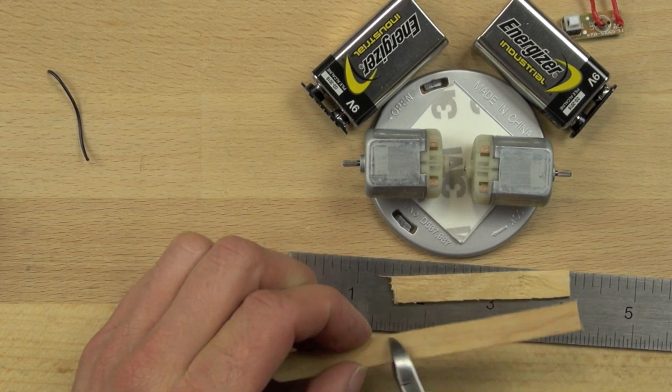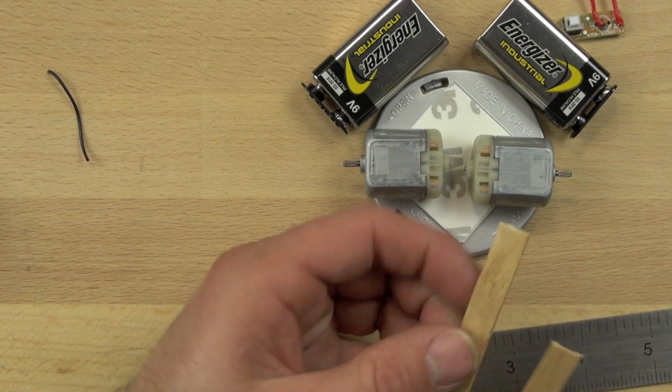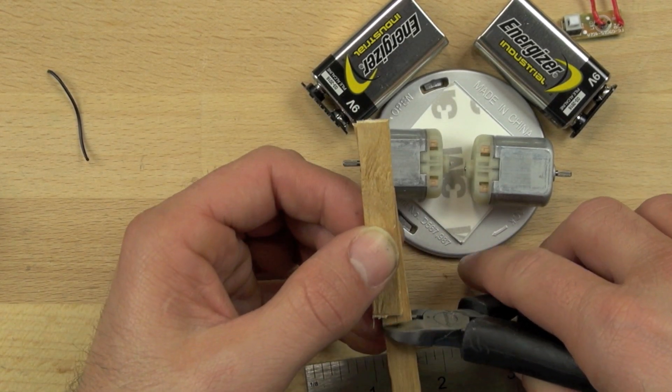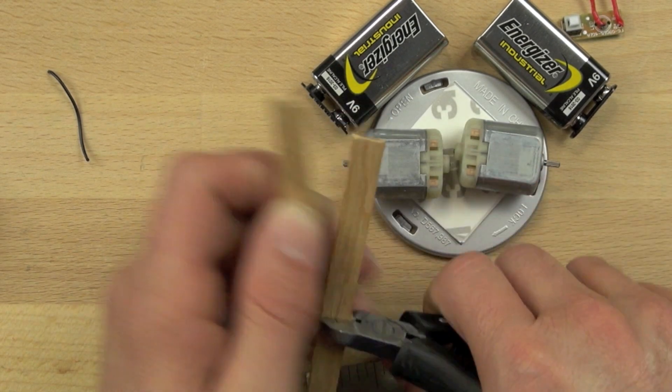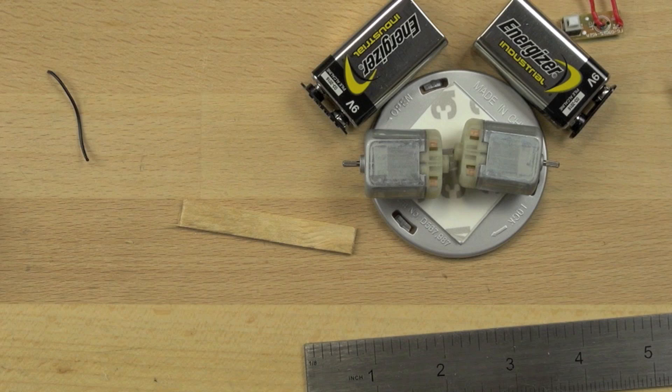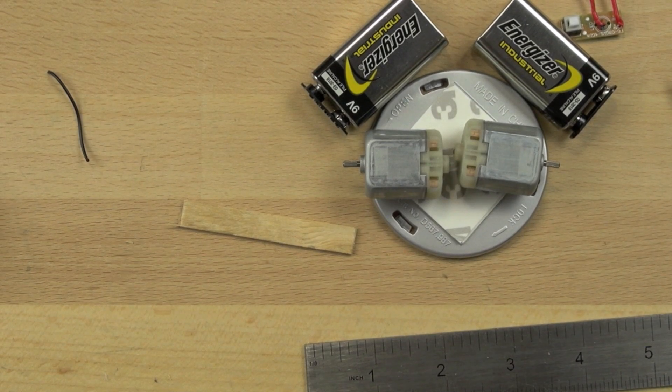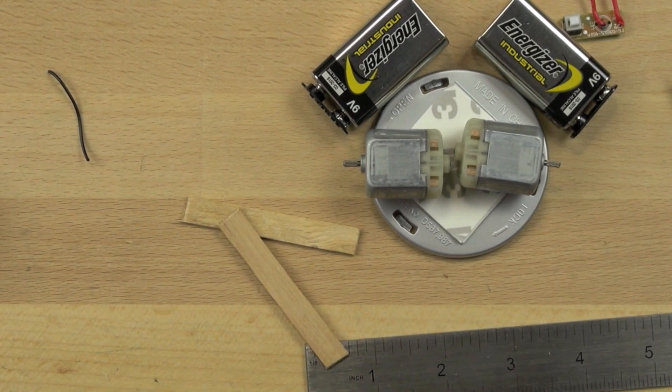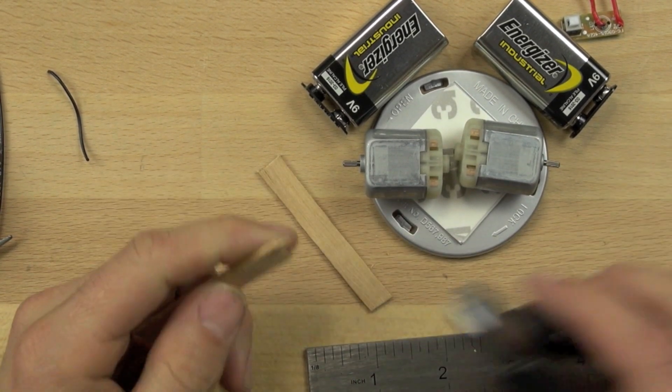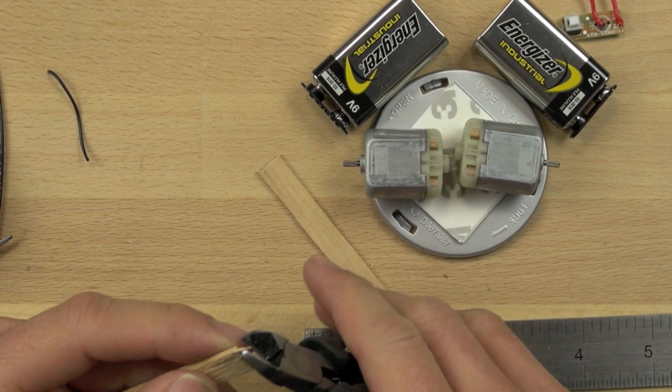Those are going to allow us to connect our motors and keep everything lined up. The popsicle sticks are kind of nice too because the hot glue doesn't cool right away on it. It takes it a second, so it gives us a little bit of time to position everything. If you put the hot glue right on the motor, it will cool right away, and sometimes it's hard to readjust things or to line things up if you need to.